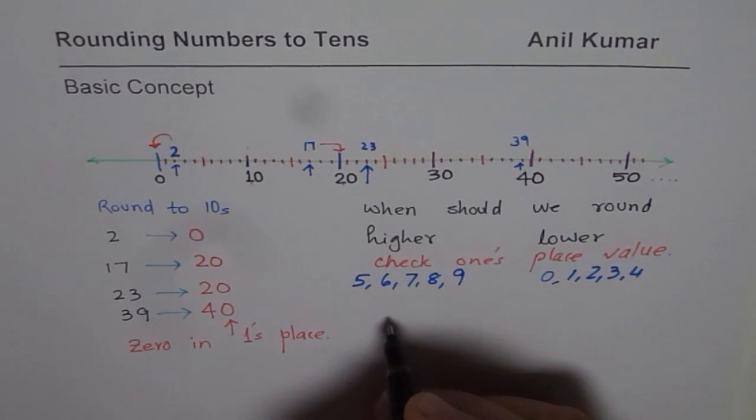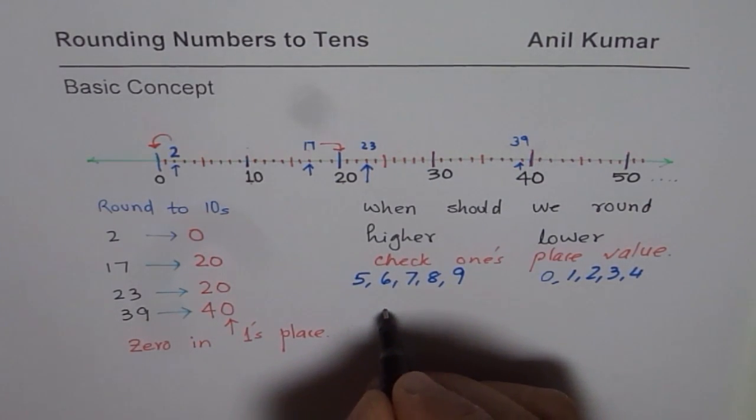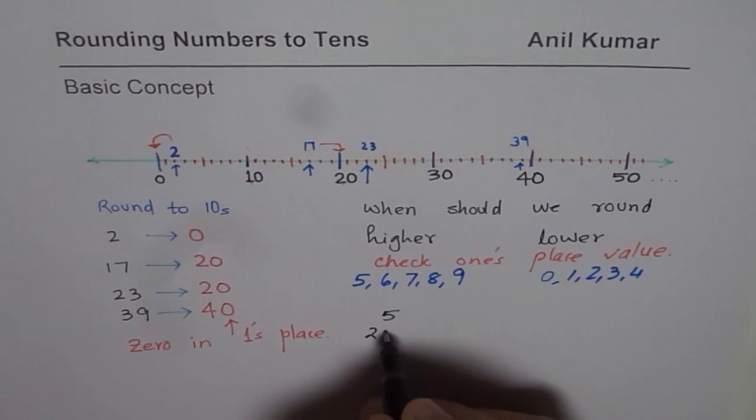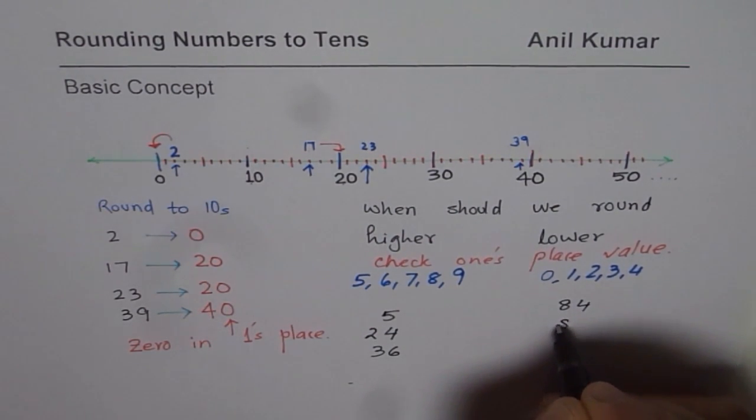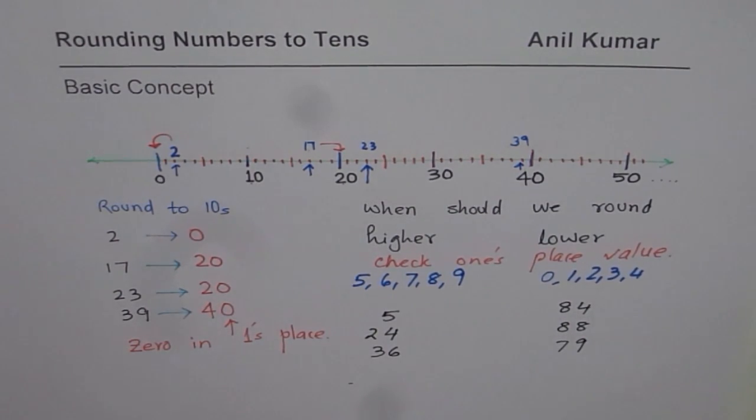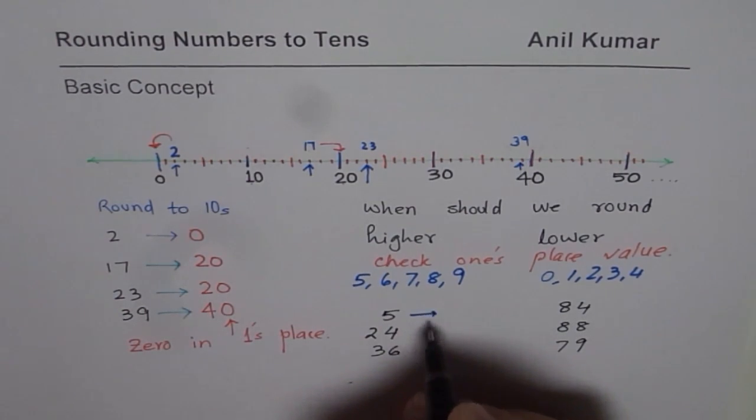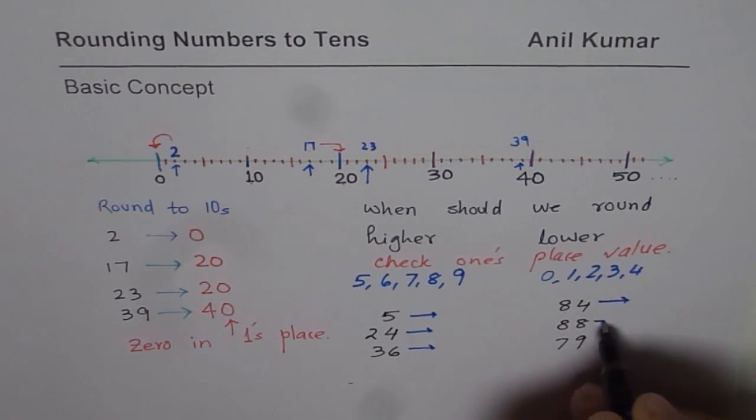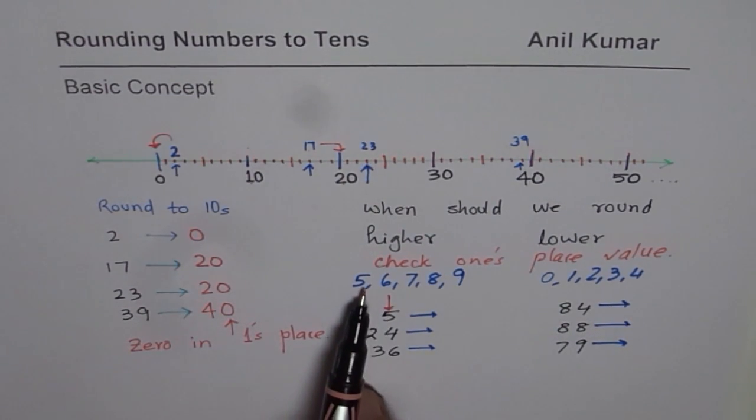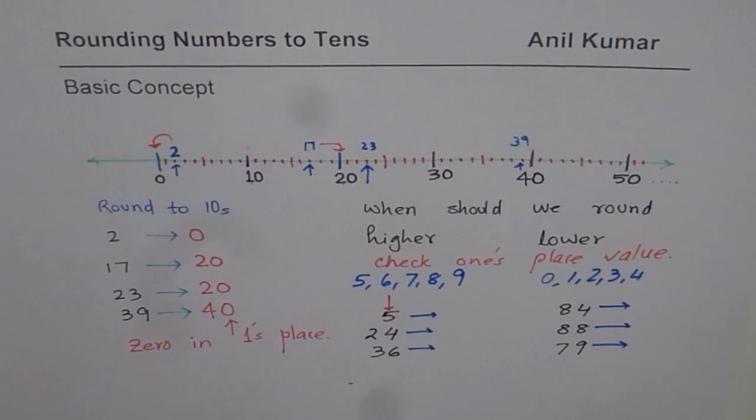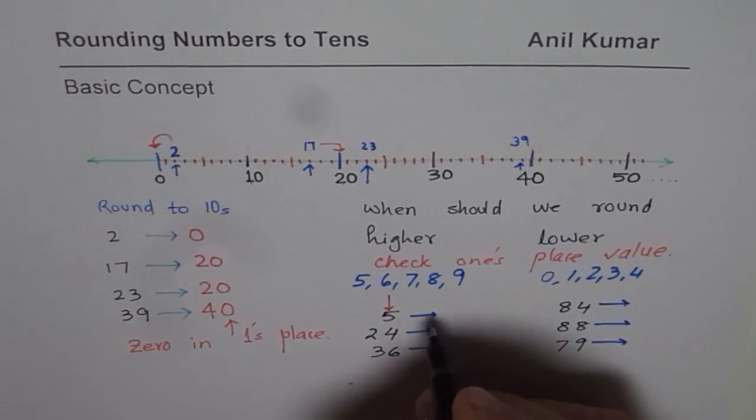Let's do this exercise. Let's round the numbers like, let me take 5 as my first number. 24, 36, let's say number 84, 88, 79. Let's round these to nearest 10's. How do we do it? We will check the number in 1's place. This is the number in 1's place. Now since this number is 5, we will round higher. So higher to 5 is the number 10. It comes between 0 and 10. So higher to 5 in 10's is the number 10.